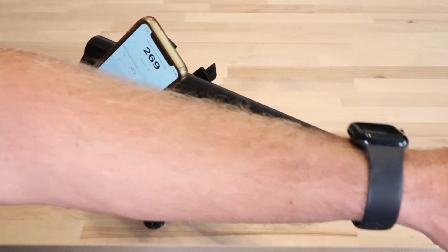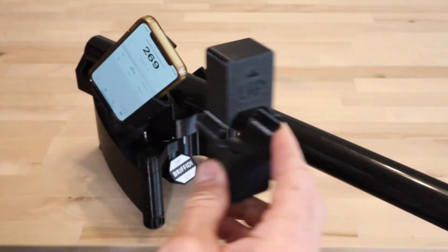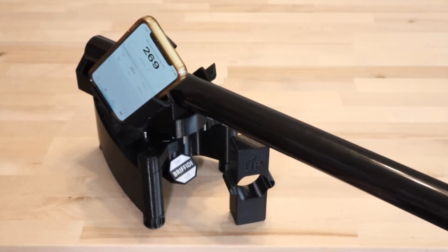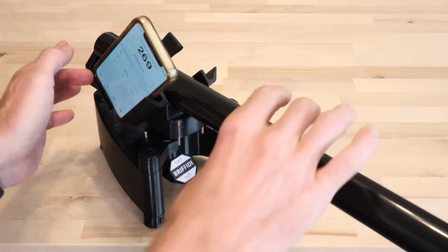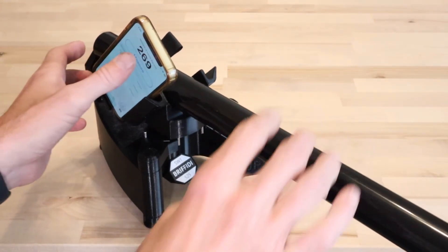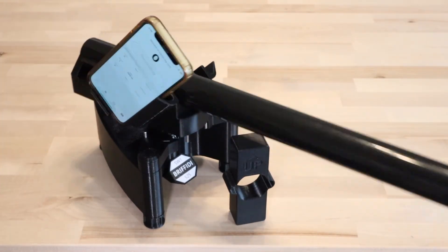Change the calibration rod to the number two configuration by either removing the weight or fully extending the rod. Create a second measurement group by tapping the plus button. Always make sure the rod is tight against the back of the cradle. And in this group, take two measurements.